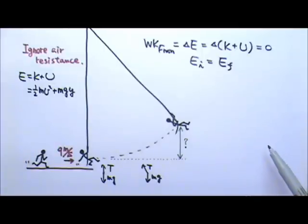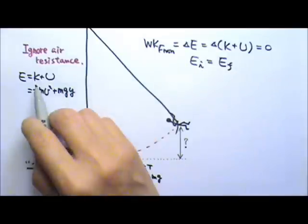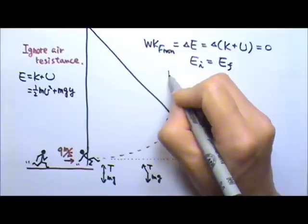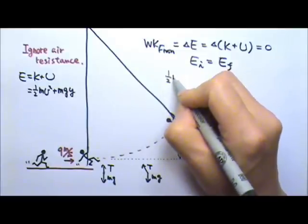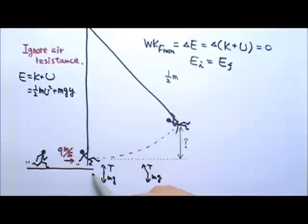At the beginning of the swing, Tarzan was running at nine meters per second, so the moment he grabs onto the vine, he still has that nine meters per second speed. So you have kinetic energy at the beginning. So it's one-half m.